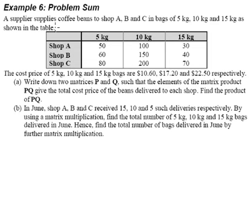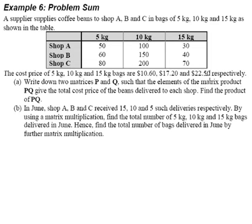A supplier supplies coffee beans to shop A, B, and C in bags of 5kg, 10kg, and 15kg as shown in the table. So this table tells us that shop A gets 50 bags of 5kg, shop B gets 100 bags of 10kg, and so forth. The cost price of 5kg, 10kg, and 15kg bags are $10.60, $17.20, and $22.50 respectively.